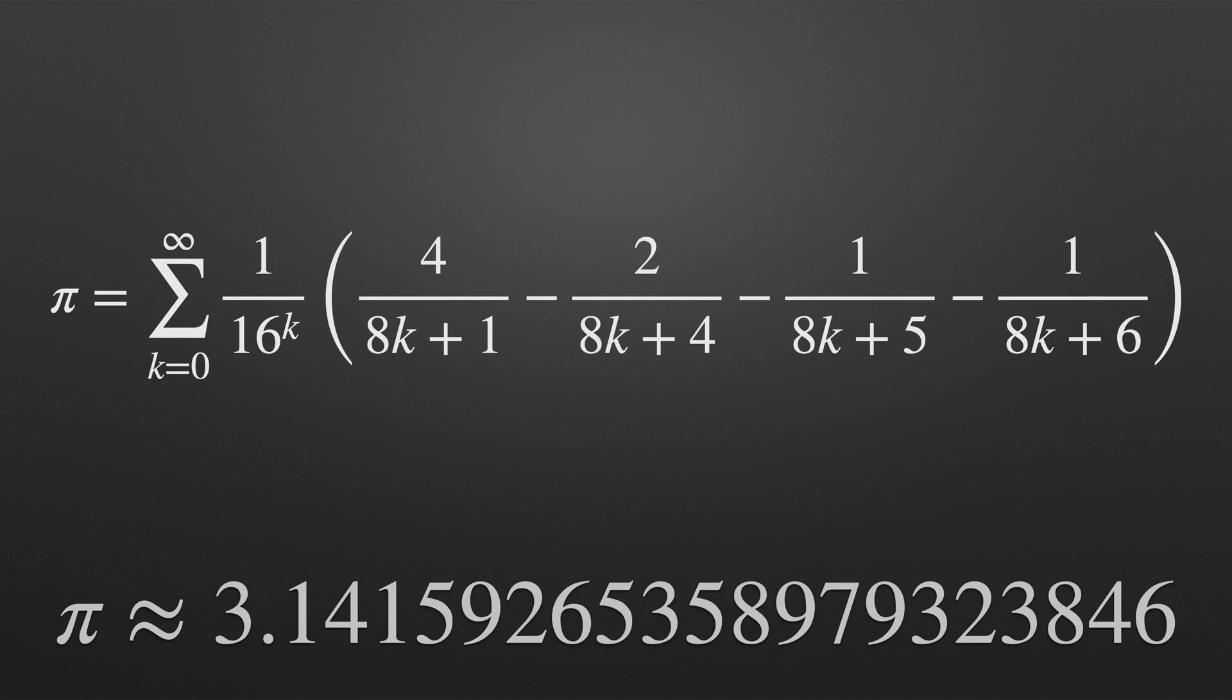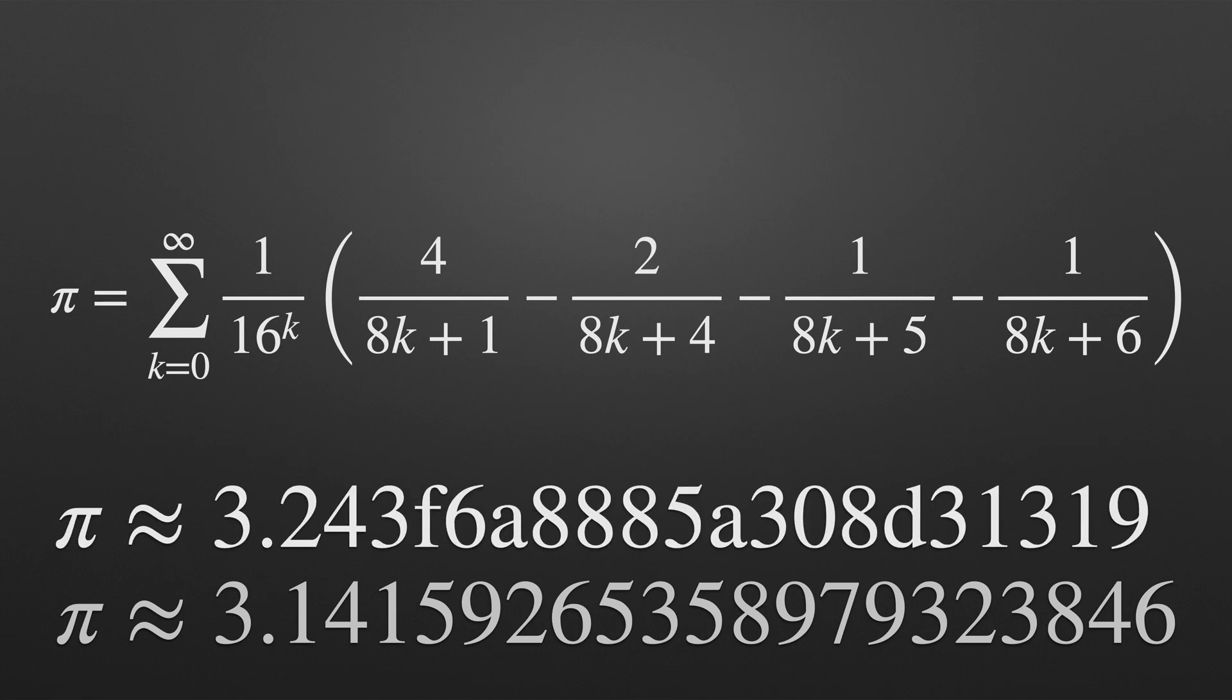This formula produces a value for pi in base 16 like so. This is pi in hexadecimal with each digit between 0 and 15. The values 10 through to 15 they get represented with letters A, B, C, D, E and F.